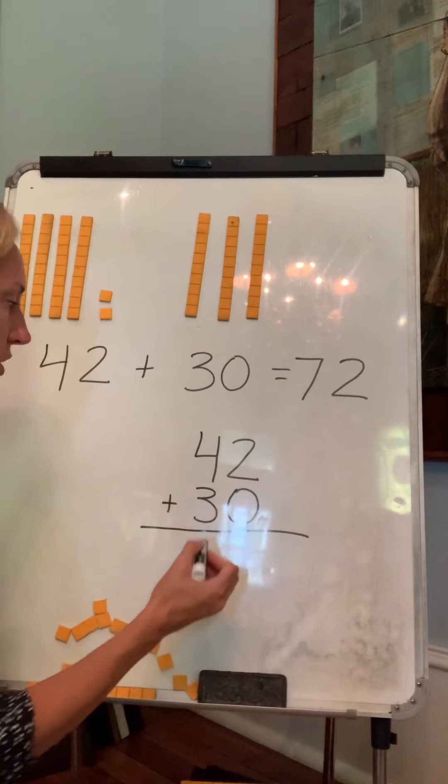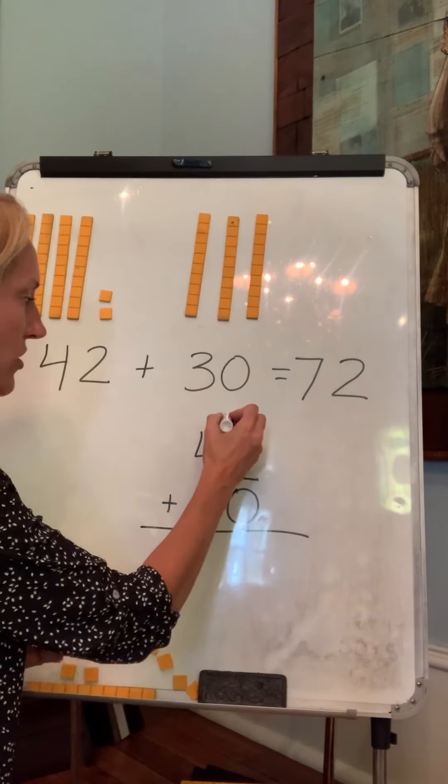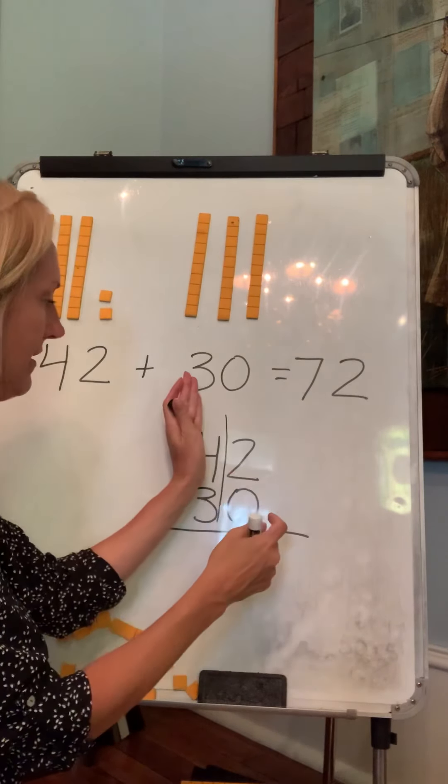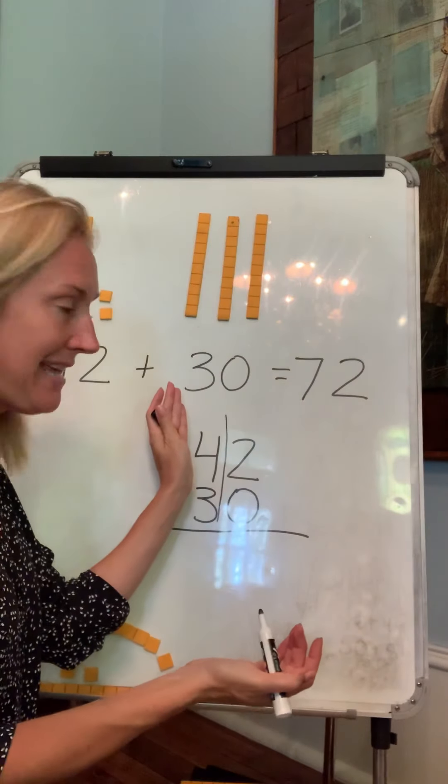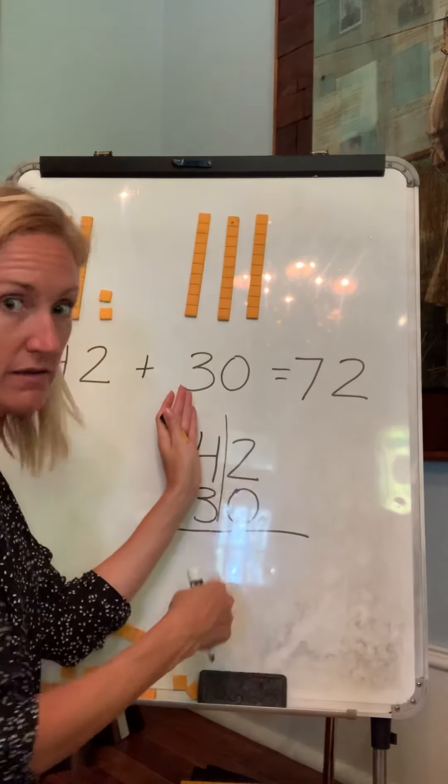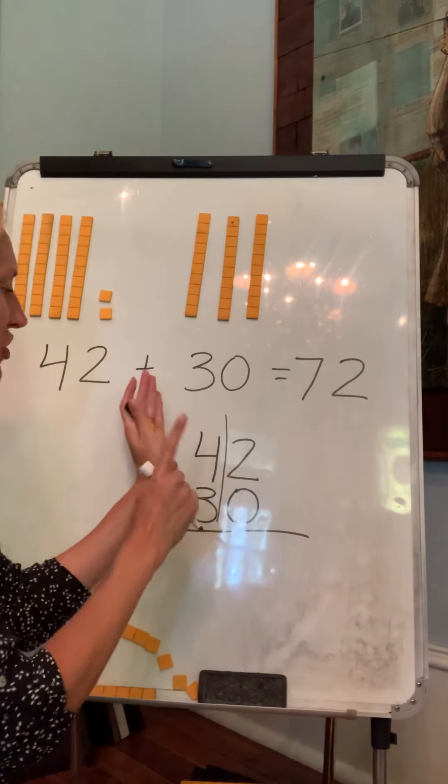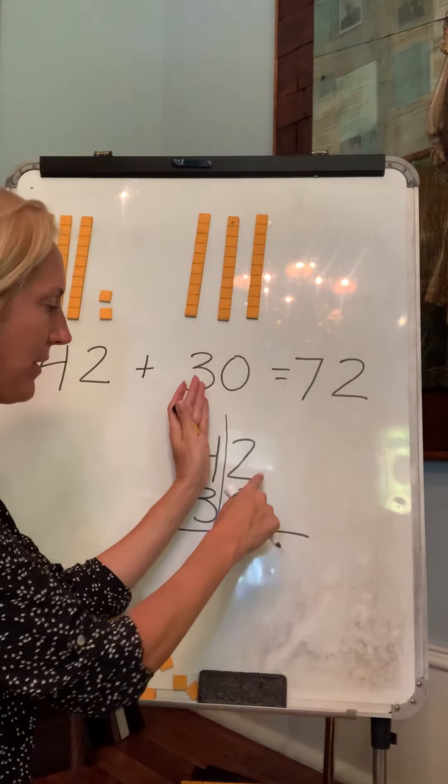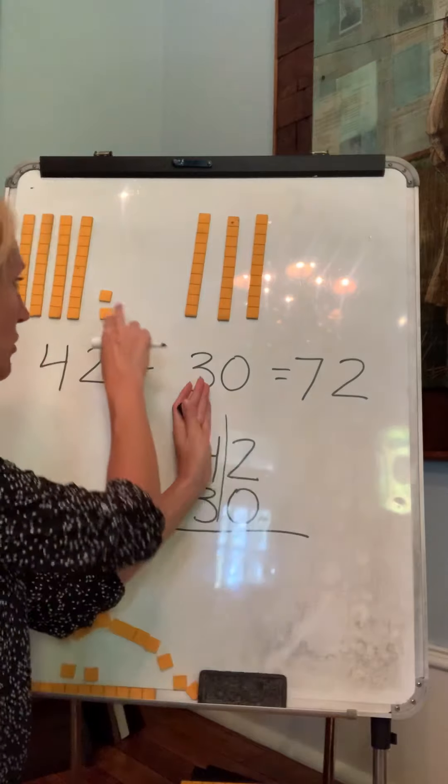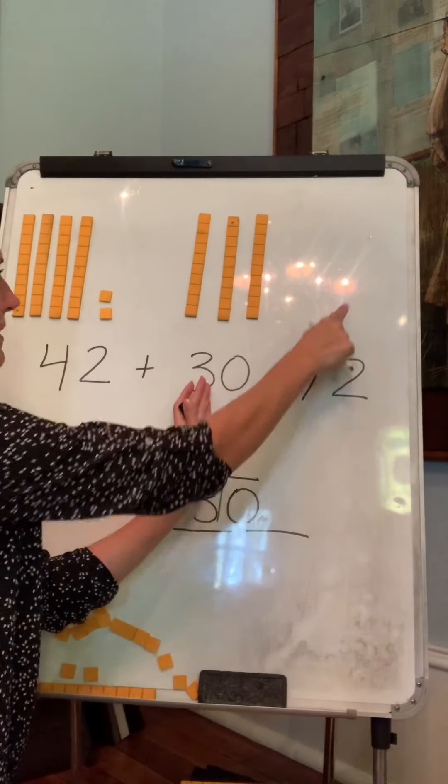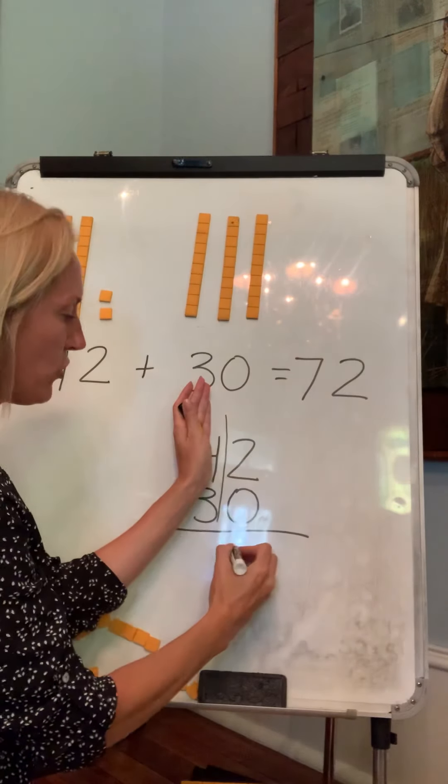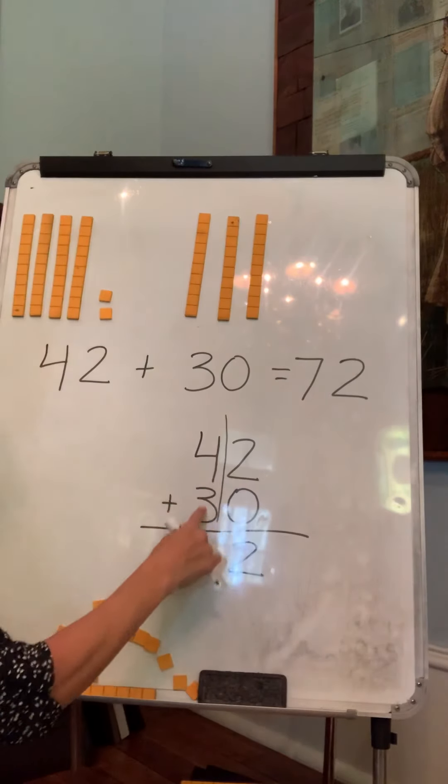42 plus 30. Now, I'm always going to start with my ones because like we talked about in the last lesson, we might have too many ones and have to make it into a 10. And we'll keep talking about that. But let's just practice this again, putting them on top. Two plus zero. So two ones plus no more ones equals two. Two.